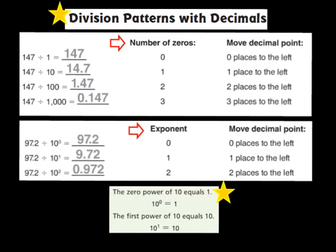Now in the next section, our pattern is going to be based on the exponent that we see in the divisor. For this first problem, we have 97 and 2 tenths divided by the 0 power of 10. The exponent there is a 0, so that means I'm not going to move my decimal at all. So 97 and 2 tenths divided by 10⁰ is still going to be 97 and 2 tenths.